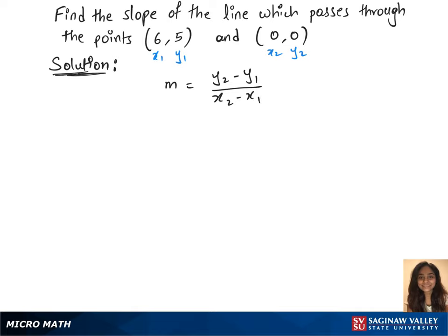Now let's plug in the points. We have m equals y2 is 0 minus y1 is 5 over x2 is 0 minus x1 is 6.